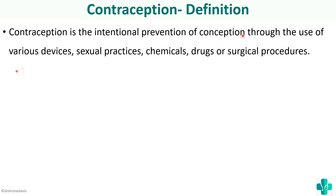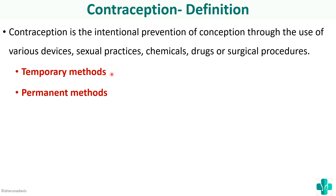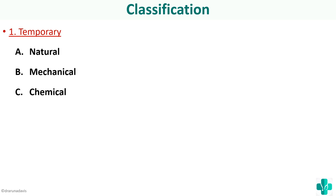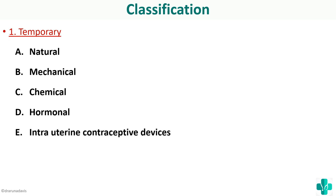Contraception can be classified as temporary methods and permanent methods. Temporary methods can be used for spacing — you can regain your fertility after a period of time — whereas permanent methods mean you permanently undergo a procedure so that you won't be fertile again. Temporary methods can further be classified into natural methods, mechanical methods, chemical methods, hormonal methods, and intrauterine contraceptive devices.